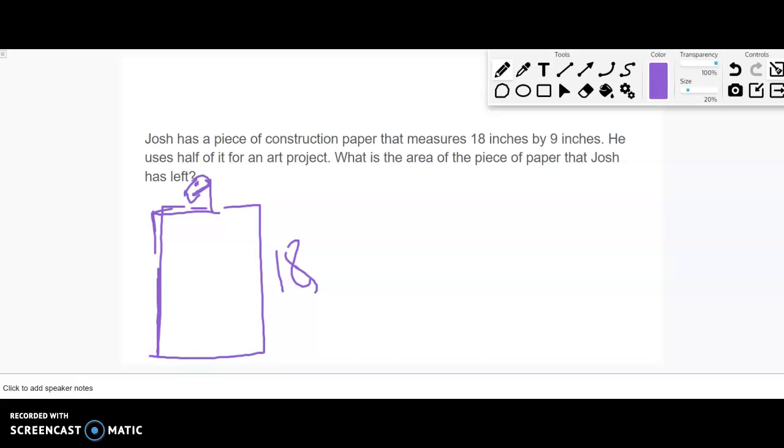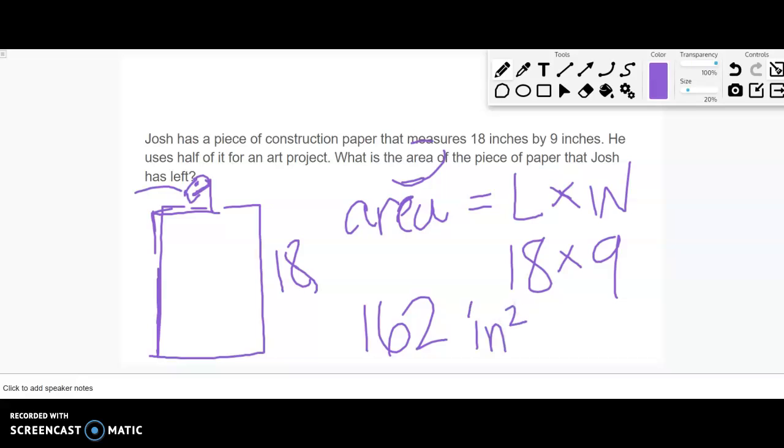Well, if we want to know the area of what's left, we should probably start by figuring out the area of the whole paper because that's the information that we have. So we'd want to find the area equals - sometimes we can just abbreviate L and W for length times width. We can do 18 times 9. That gives us 162 inches squared.